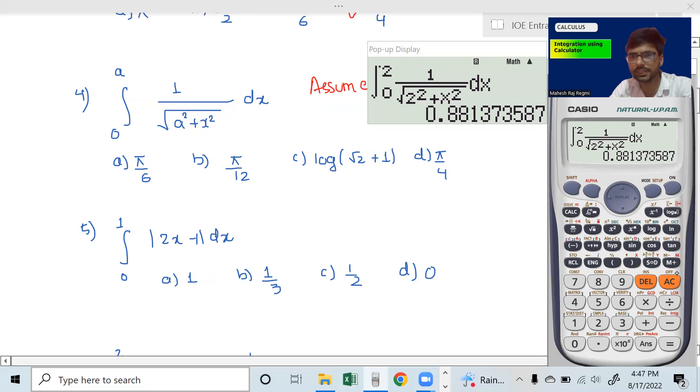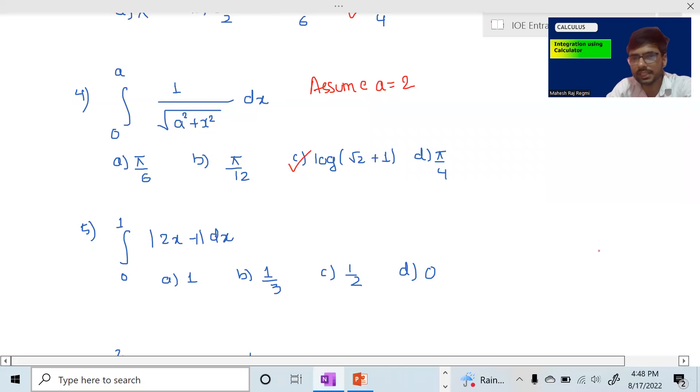The value is 0.881. Option check: pi divided by 6 gives 0.5. Pi divided by 2. The answer is log, L-N, plus one.